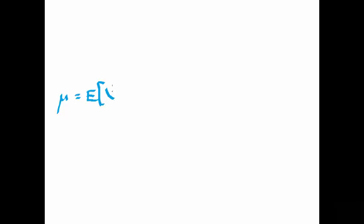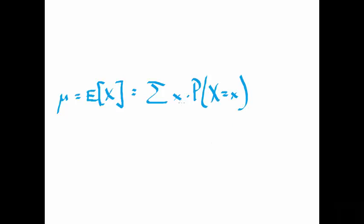Let's revisit the population mean formula, or the mean for a random variable. The mean — the expected value of a random variable x — is the sum of all the values it can take on, times the probability that x takes on those values. It's a weighted average where the probabilities are the weights.